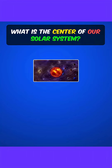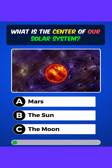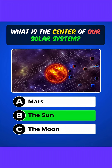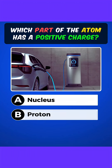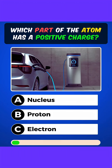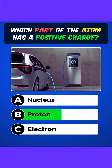What is the center of our solar system? Answer B: The Sun. Which part of the atom has a positive charge? Answer B: Proton.